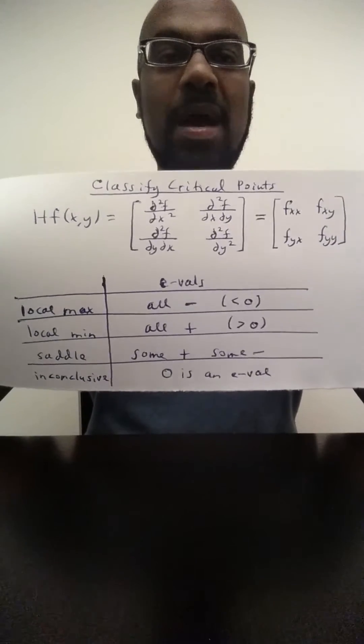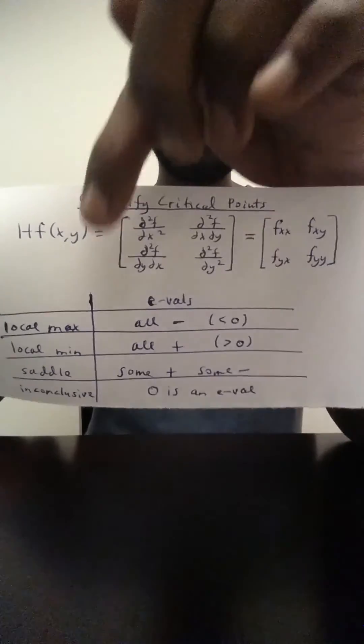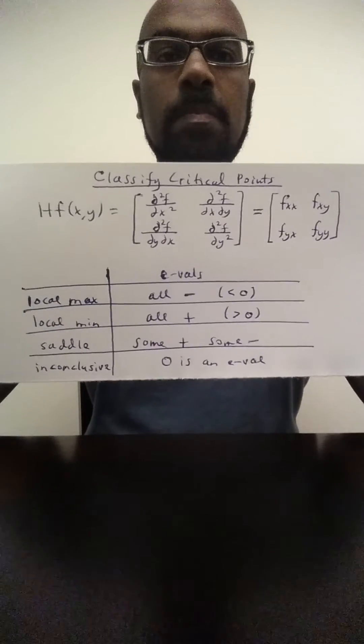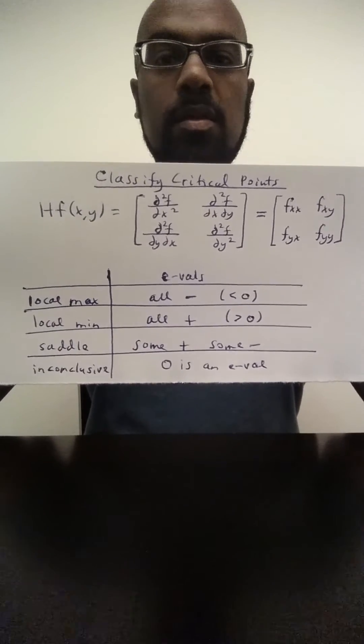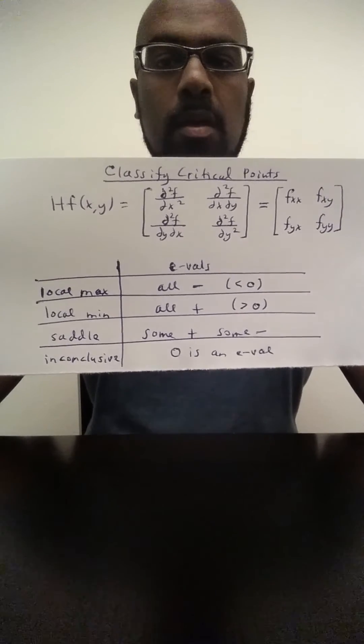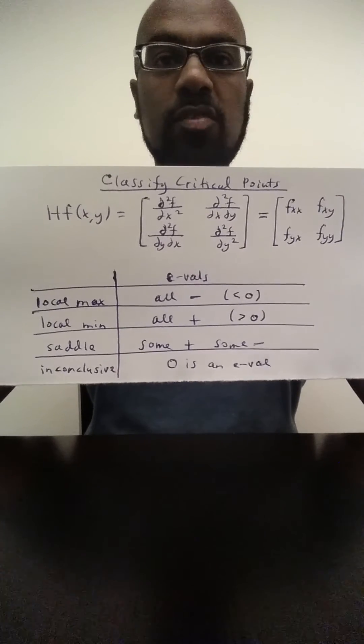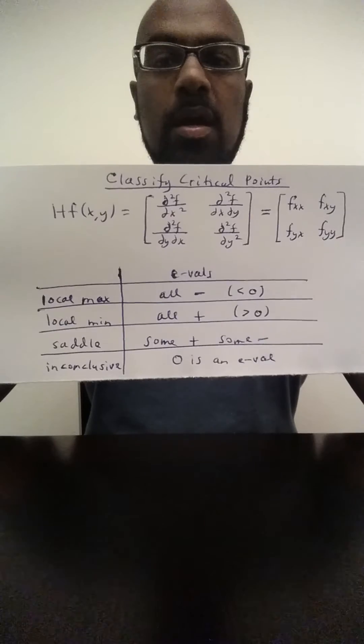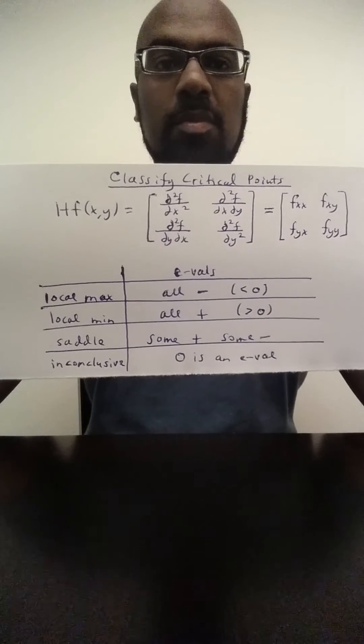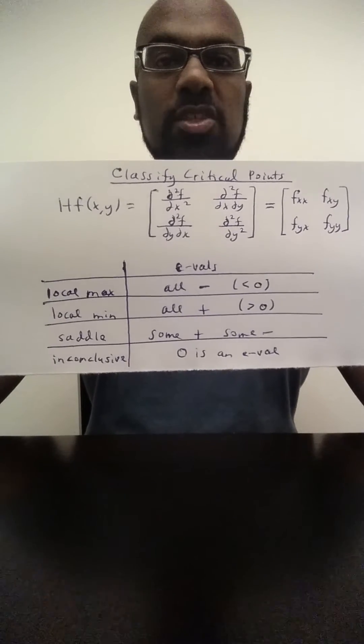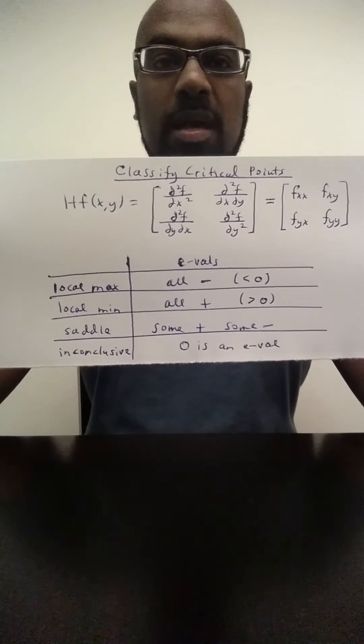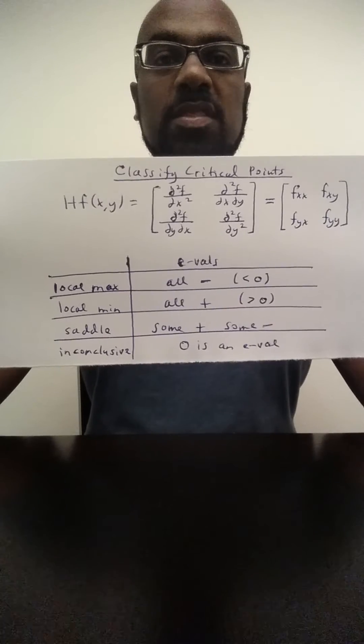Okay, so if you have a specific critical point and you compute the Hessian of your given function and evaluate the Hessian at that particular critical point, you can classify the critical point based on the eigenvalues of this matrix. And here's how this naturally extends single variable calculus in a way that will make it easier to recall what the multivariable critical point classification conditions are.